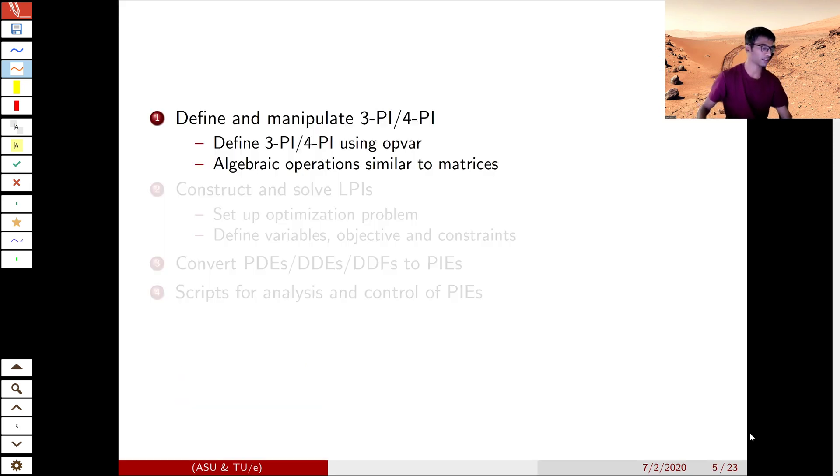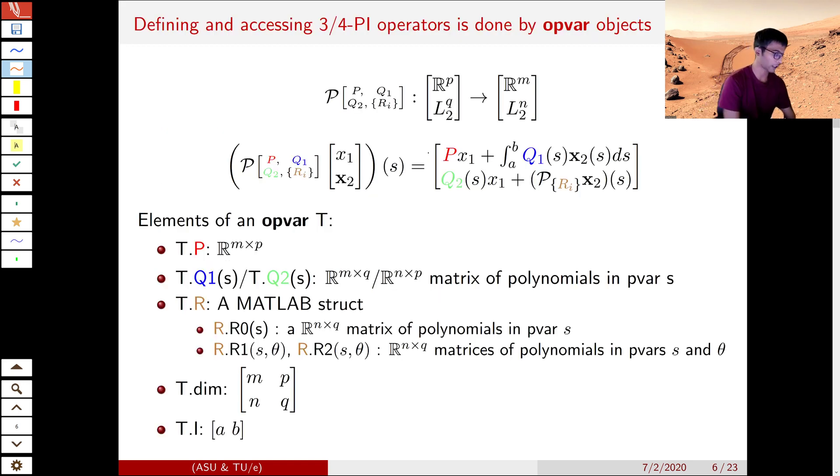So how do we define this in MATLAB? For that, we introduce a class called OPVAR. This OPVAR object has eight components, six of which are the components required to define a PI operator, that is P, Q1, Q2, R0, R1, R2, just like the way it's defined in the PI operator.